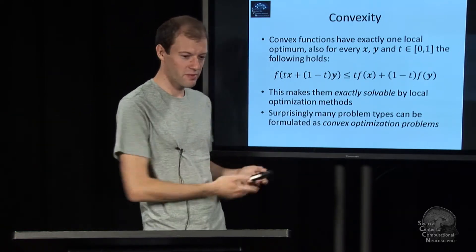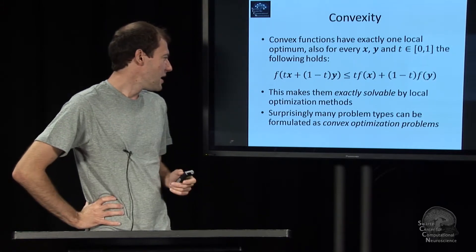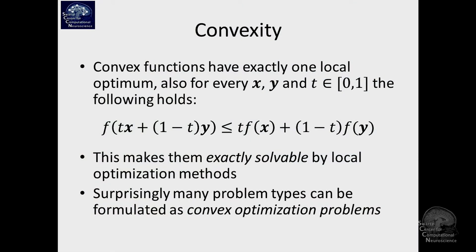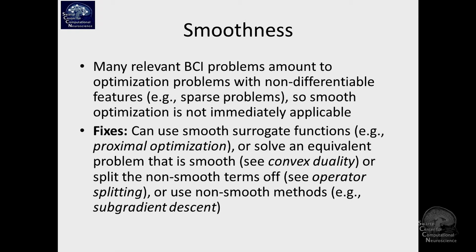What's kind of surprising is that there are many problem types where you can achieve this and that which you can formulate as convex optimization problems, even though it might not be obvious at first glance how to do that. That's a constraint on the functional form. The other part that you need to think about is whether the problem is actually smooth or whether it has features that are not differentiable.